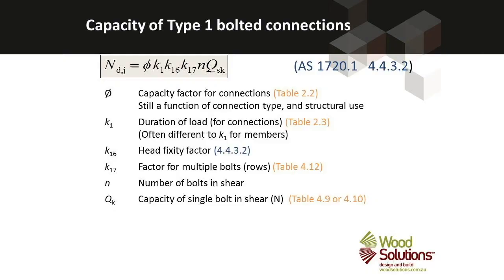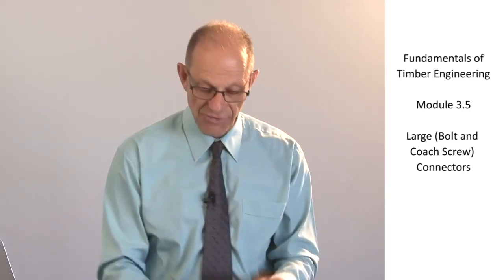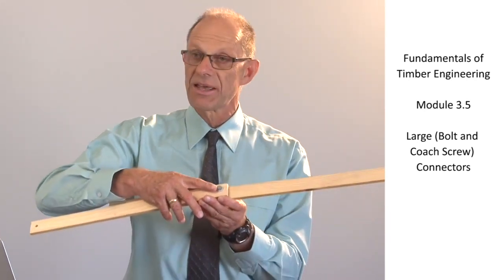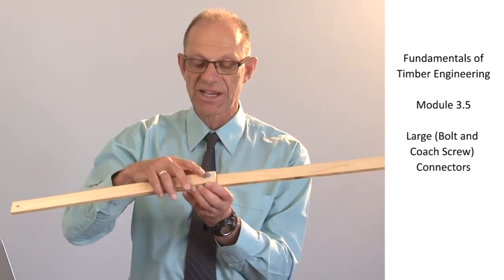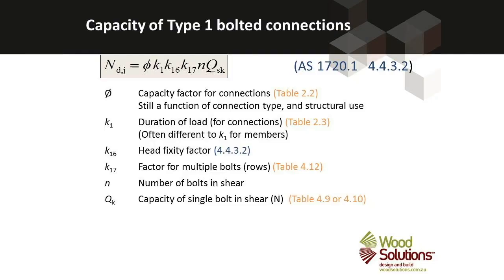Type 1 connections, this is the capacity of a type 1 bolted connection. We've got a phi factor drawn from a table that's specific for bolted connections. We've got a K1 factor appropriate for bolted connections. K16 is a head fixity factor and if the bolt passes through a thick metal plate, that metal plate can stop the bolt from rotating and give the connection extra strength. The K17 factor allows for multiple rows of bolts along the length of a connection. And finally the number of bolts and the capacity of a single bolt in shear.